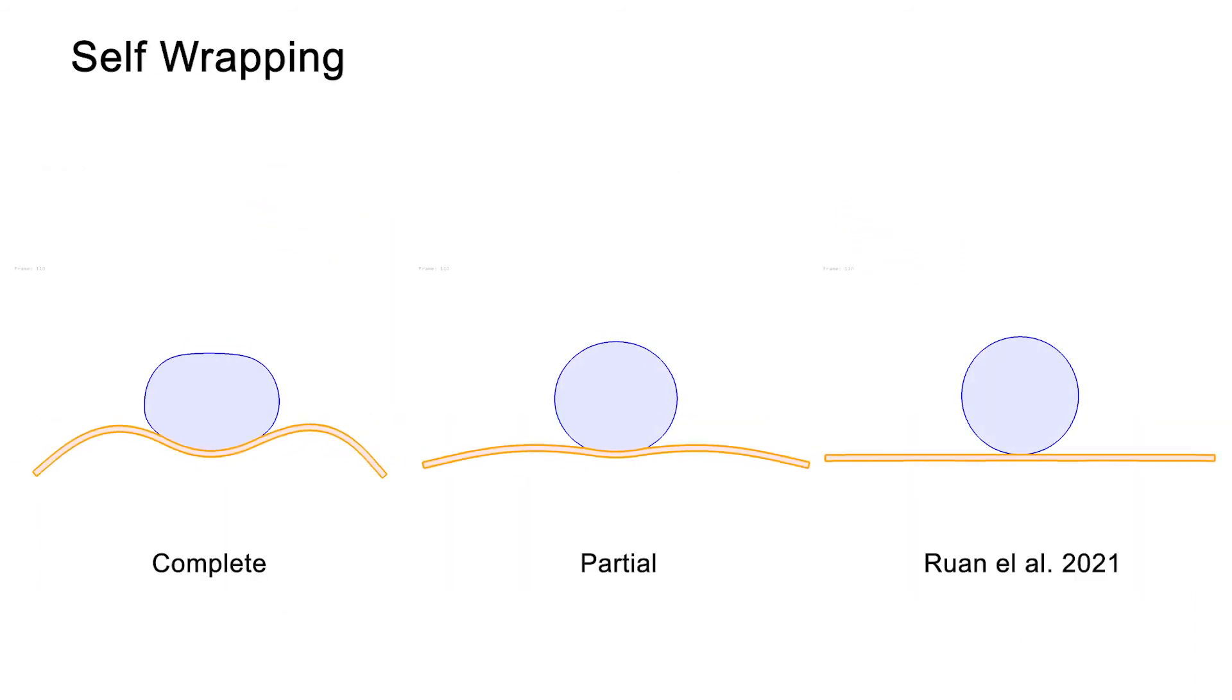Self-wrapping in 2D can be controlled to form different contact angles, while previous coupling methods fail to consider the deformation driven by capillary forces.